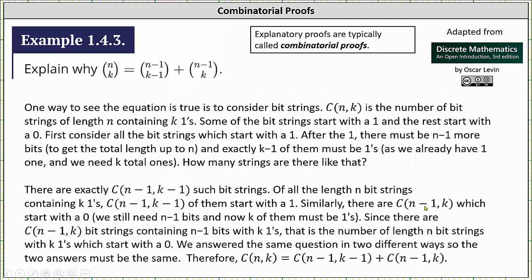Similarly, there are N minus one choose K which start with a zero. We need N minus one bits and now K of them must be ones.